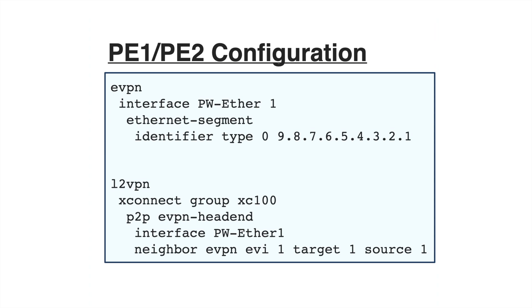You can see a very basic configuration for a headend. It's pretty much the same, except we are replacing the pseudowire with EVPN VPWS, and we are also configuring the Ethernet segment, which is there to bring the EVPN control plane on top of the headend. So this one is bringing another mode for redundancy.